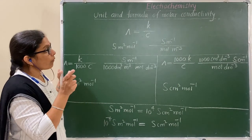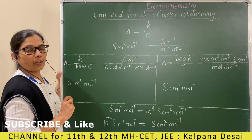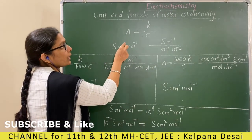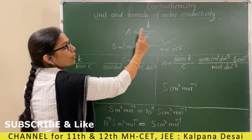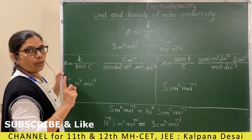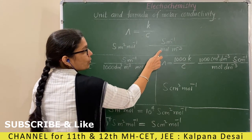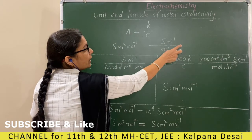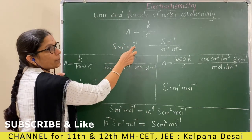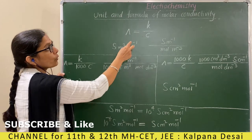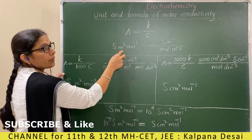Let us see some tips for the unit and formula of molar conductivity. Remember, the unit and formula of molar conductivity depends on the unit of conductivity and concentration. If conductivity is given in the SI unit siemen per meter and concentration is also in the SI unit mole per meter cube, then the unit of molar conductivity is siemen meter square per mole. If we use this formula with conductivity in this unit and concentration in this unit, then molar conductivity is obtained in this unit.